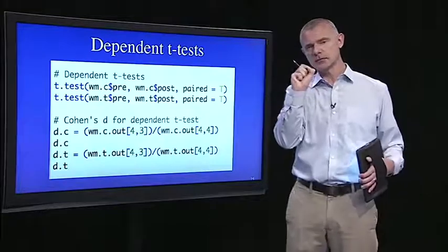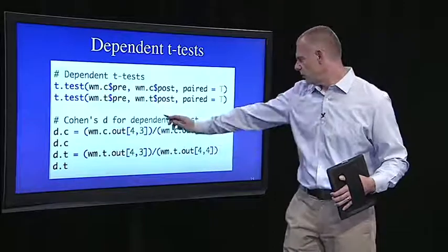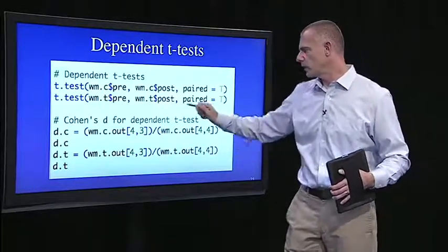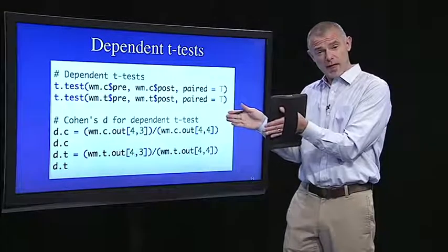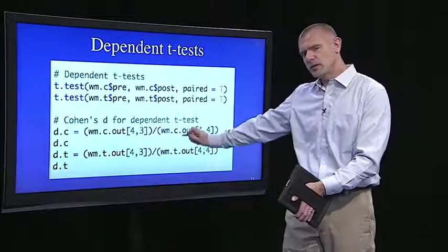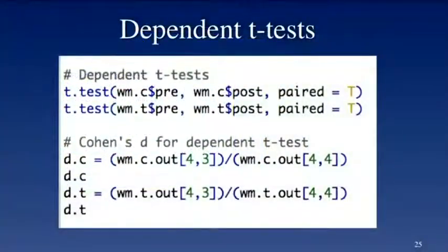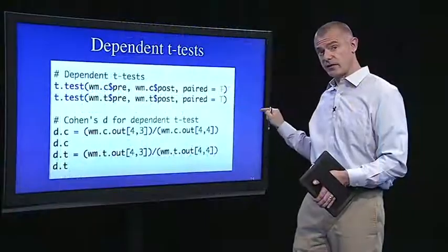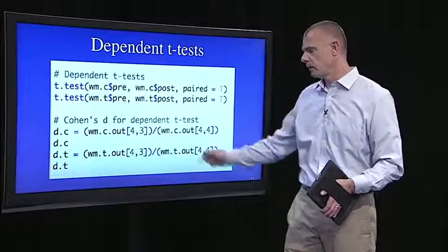Well, it's just the mean difference over the standard error of the difference. And there's some funky looking code here, but remember WM.C.out from the previous slide, that contains the descriptive statistics for that control condition. So we can sort of go into that table. Think back to your matrix algebra lecture. That's the fourth row, third column. We can pick that out. And that is the mean on the gain score for the control condition. And then I divide that by the standard deviation, which is in the fourth row, fourth column of that output. Same thing for the training.